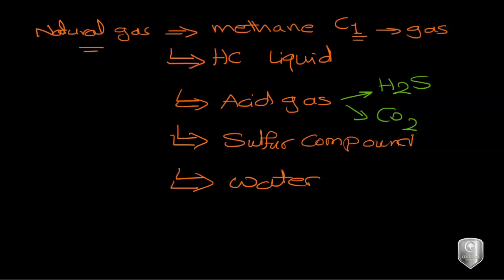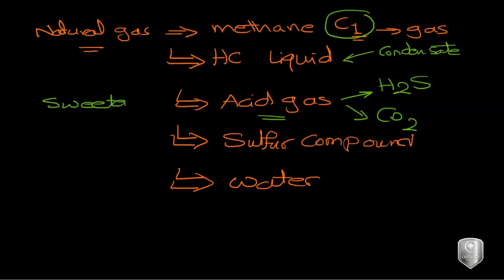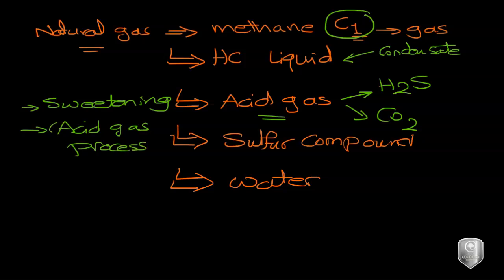To have methane or natural gas with the specifications needed to be sent through the pipeline or to meet requirements for household uses, you need to remove these liquids. This process is called condensate removal and is the first step. After that, for acid gases to be removed, we call the process sweetening — or as Aspen Tech calls it, acid gas processing. This will be the first topic in the exam.